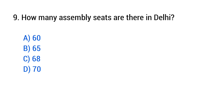Question No. 9: How many Assembly seats are there in Delhi? The right answer is Option D, 70.